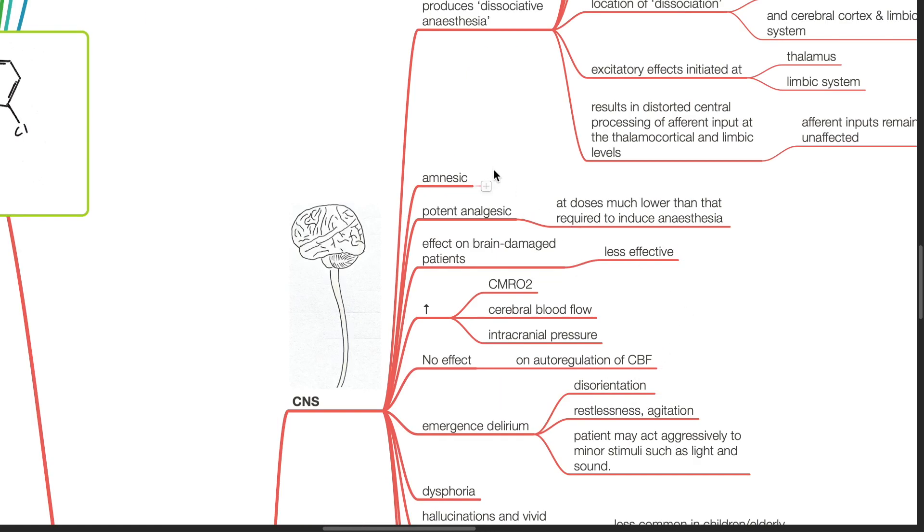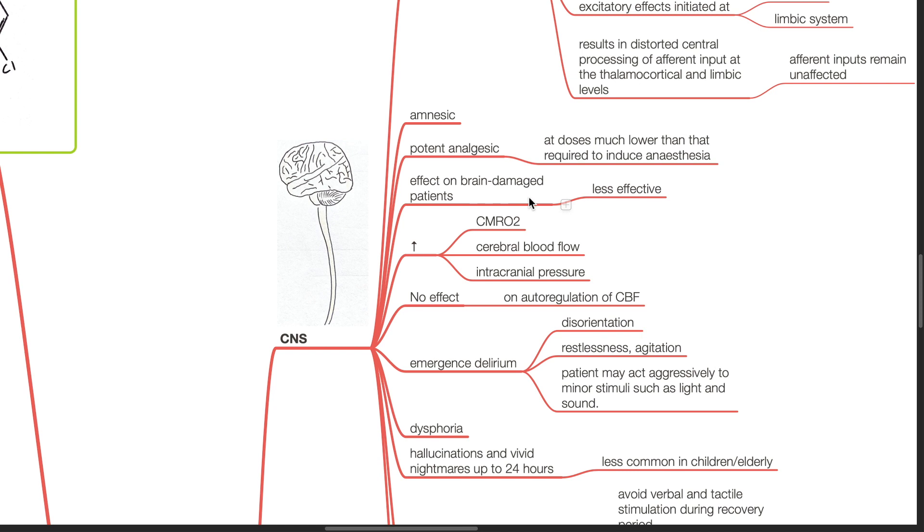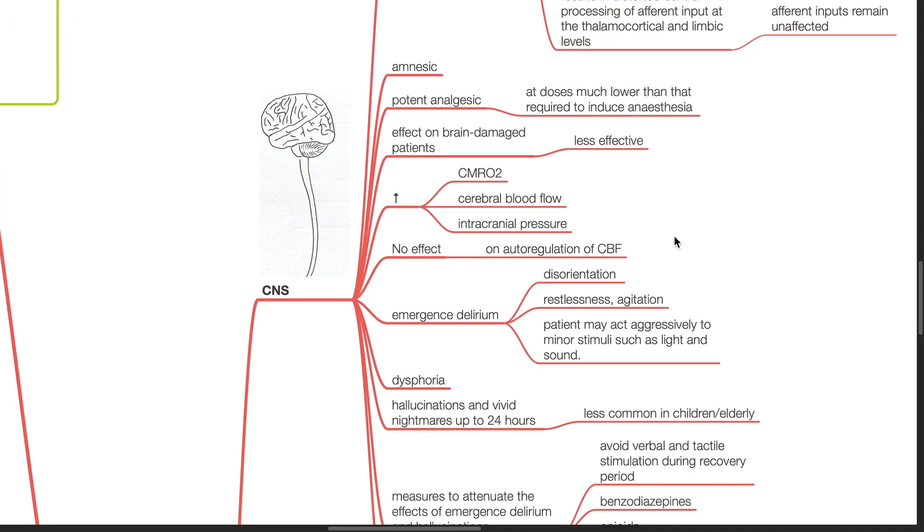Ketamine is a potent analgesic at doses much lower than that required to induce anesthesia. Effect of ketamine on brain-damaged patients is less effective. Ketamine increases cerebral metabolism, cerebral oxygen consumption, cerebral blood flow and intracranial pressure. However, there are no effects on autoregulation of cerebral blood flow.